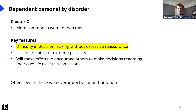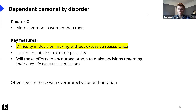Dependent personality disorder is more common in women than men. These individuals have difficulty making decisions about their own life without considerable support, need excessive reassurance, lack initiative, and are often described as incredibly passive — going out of their way to get others to make decisions for them. This typically arises from an overprotective or authoritarian parent or guardian in childhood, resulting in an inability to make decisions independently.